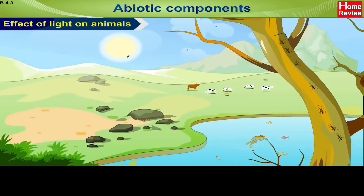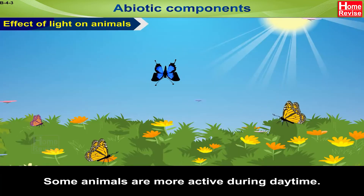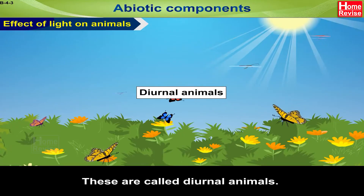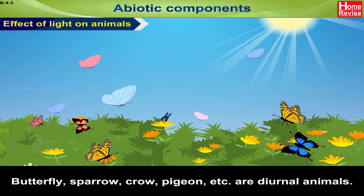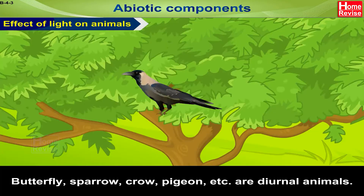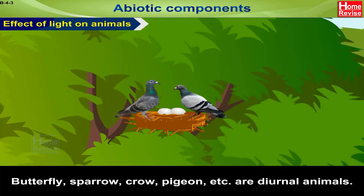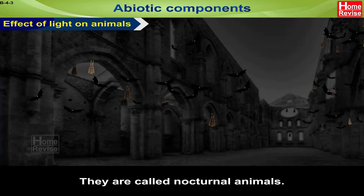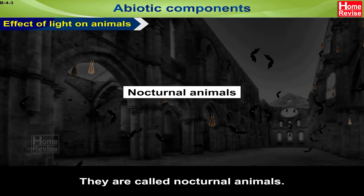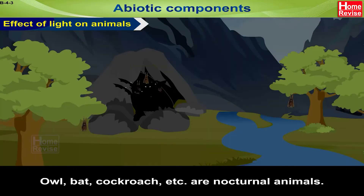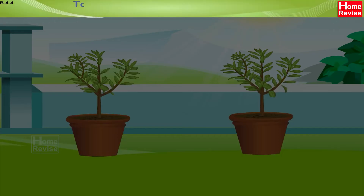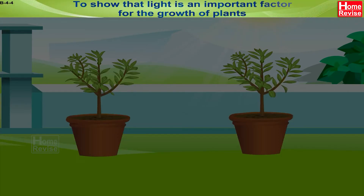Effect of light on animals: Some animals are more active during the day — these are called diurnal animals. Butterfly, sparrow, crow, and pigeon are examples of diurnal animals. Some animals are active only during the night — they are called nocturnal animals. Owls, bats, and cockroaches are examples of nocturnal animals.